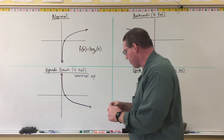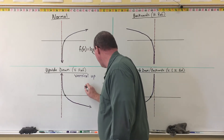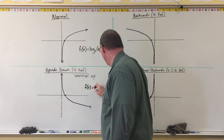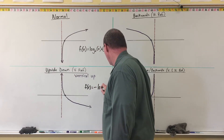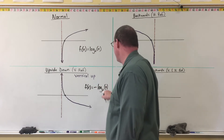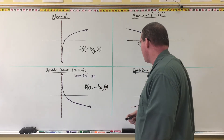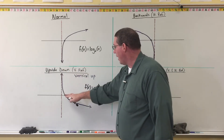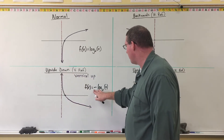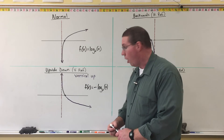So if it's going vertical up whereas normal is vertical down, it's upside down. When that happens, here's how it changes the function — it's going to become f(x) = negative log base 2 of x. The base could be something different, but in this example we're doing log base 2. So upside down goes vertical up but it's still flat to the right, and all we're going to do is put a negative on the logarithm.